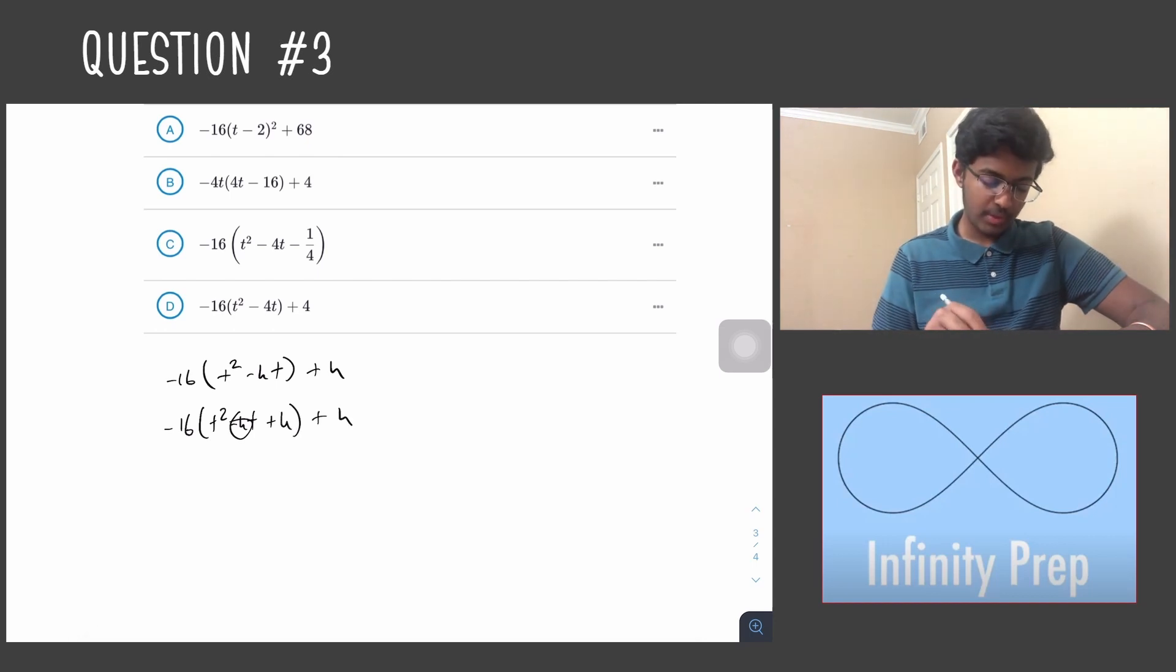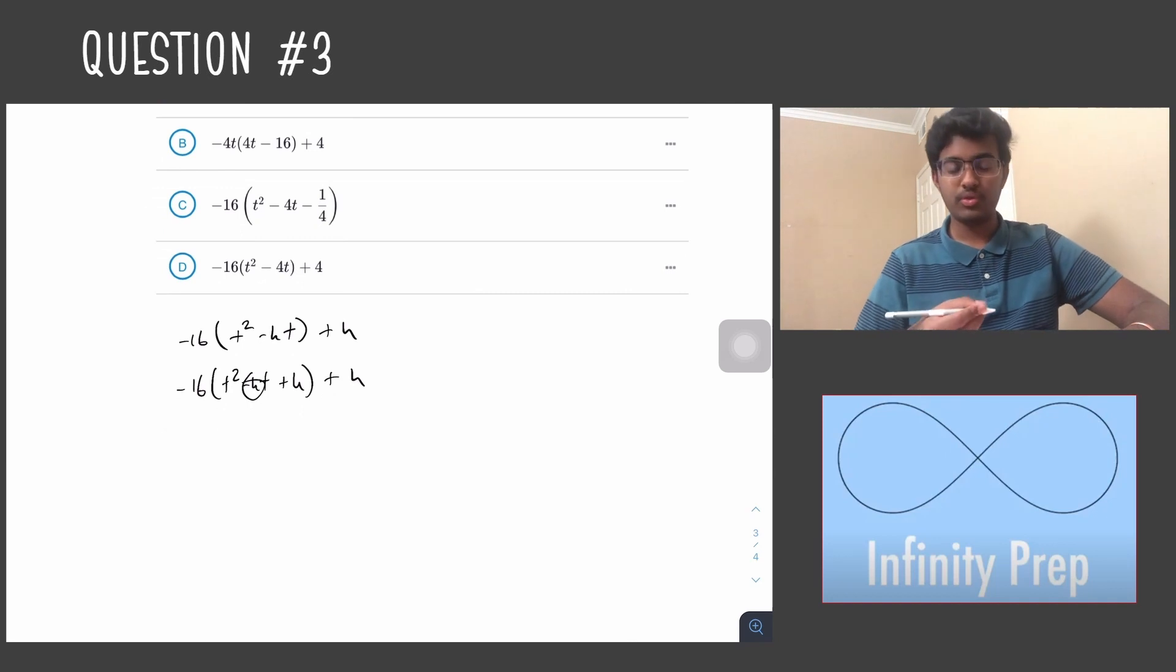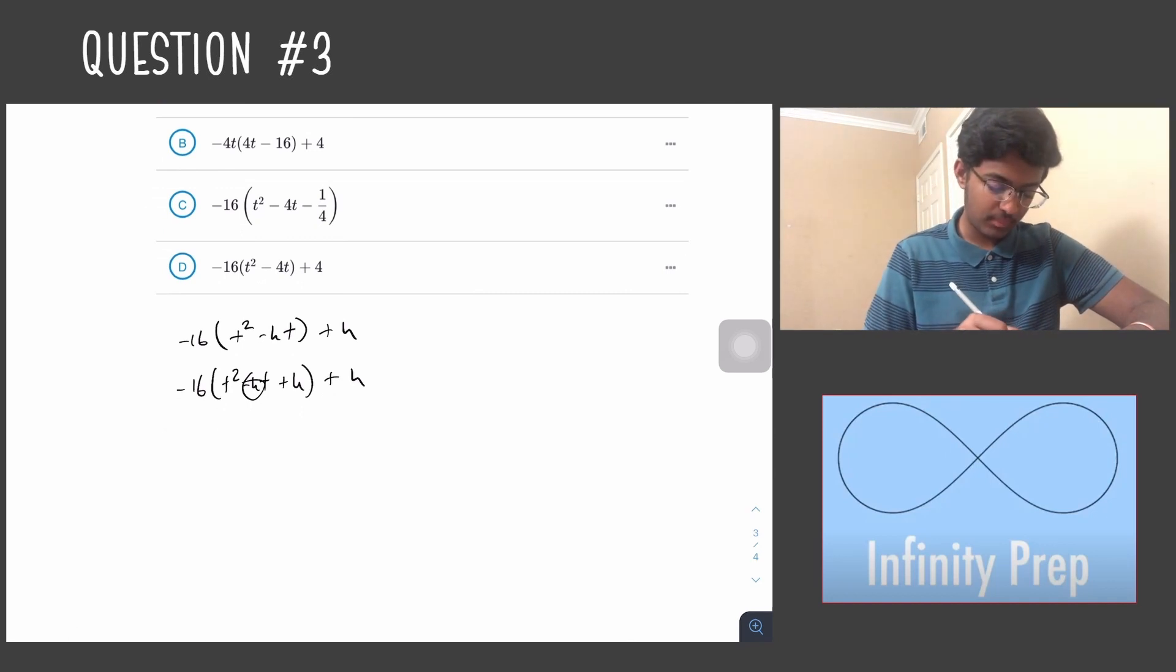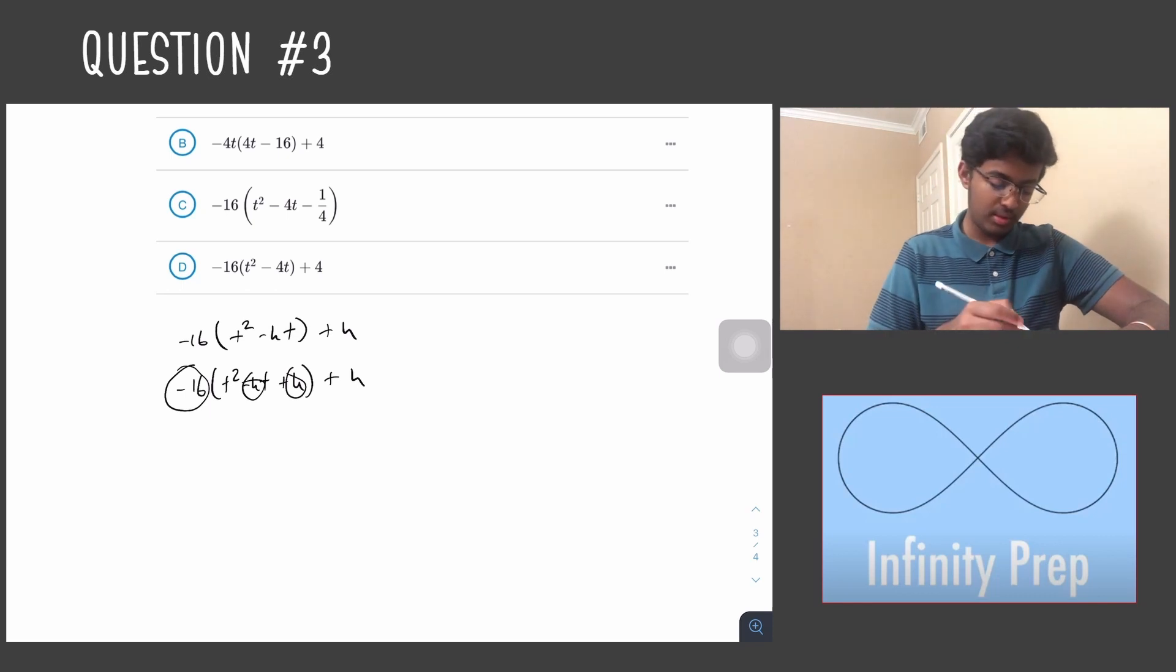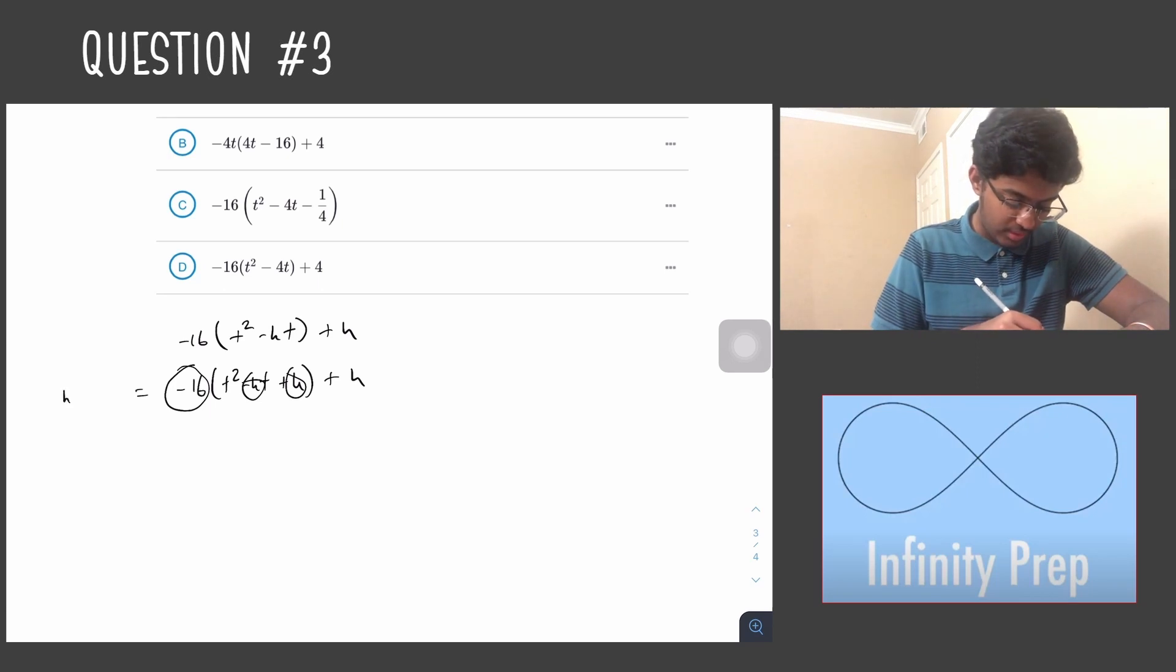Plus 4. And remember that we also need to add the product of -16 and 4 to both sides in order to cancel out the addition we just made right here. So we need to add -64 to the other side, which equals h(t) - 64.